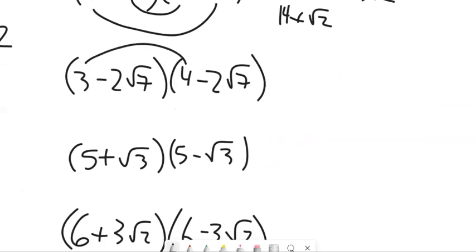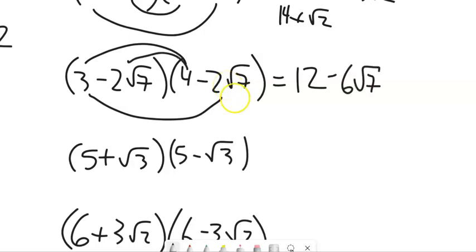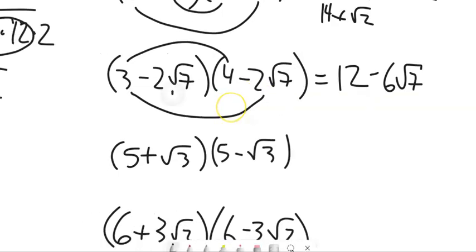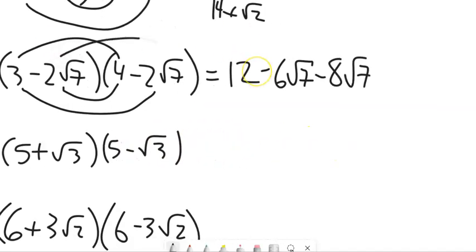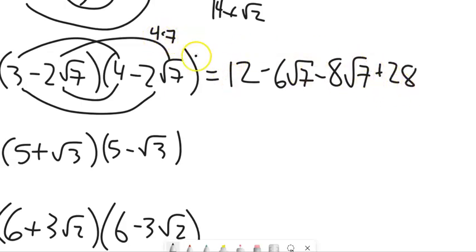Similarly for (3 − 2√7)(4 − 2√7): 3 times 4 is 12. 3 times negative 2√7 is −6√7. Negative 2√7 times 4 is −8√7. Then negative 2√7 times negative 2√7: a negative times a negative is positive, giving 4 times 7 which is 28. Combining: 12 plus 28 is 40, and −6√7 minus 8√7 is −14√7. Result: 40 − 14√7.